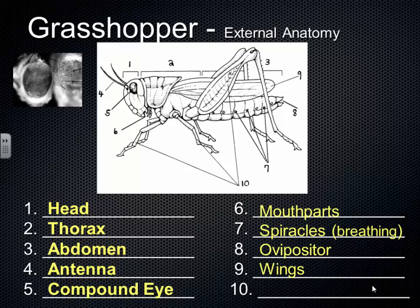Finally, like all insects, the grasshopper has six legs, attached to the thorax. Two of the grasshopper's legs are much larger and used for propelling the grasshopper — it starts flight by jumping high into the air. Those large legs are also used to make sound: they rub them very quickly against the wings or abdomen, creating the sound that grasshoppers and crickets make.